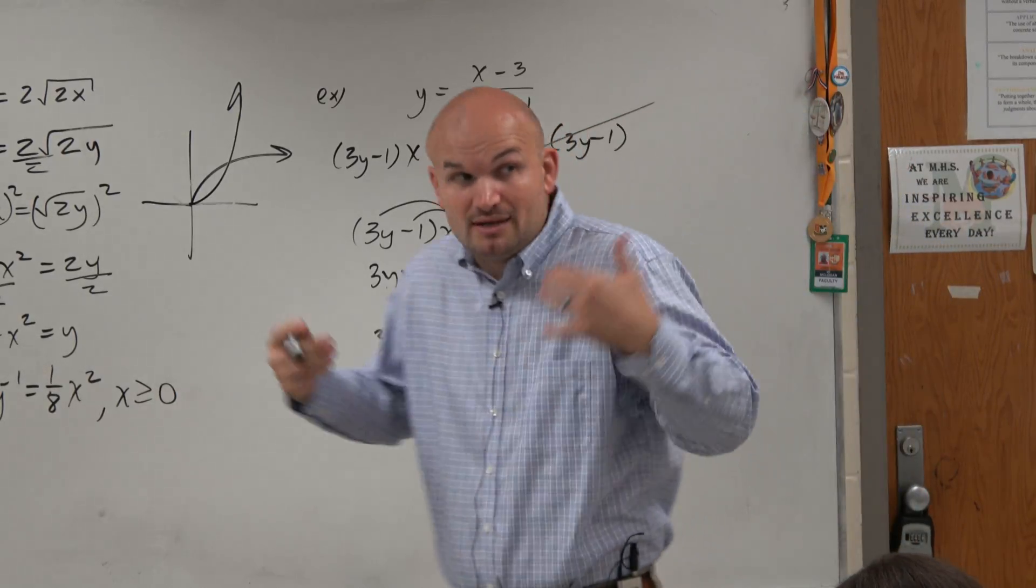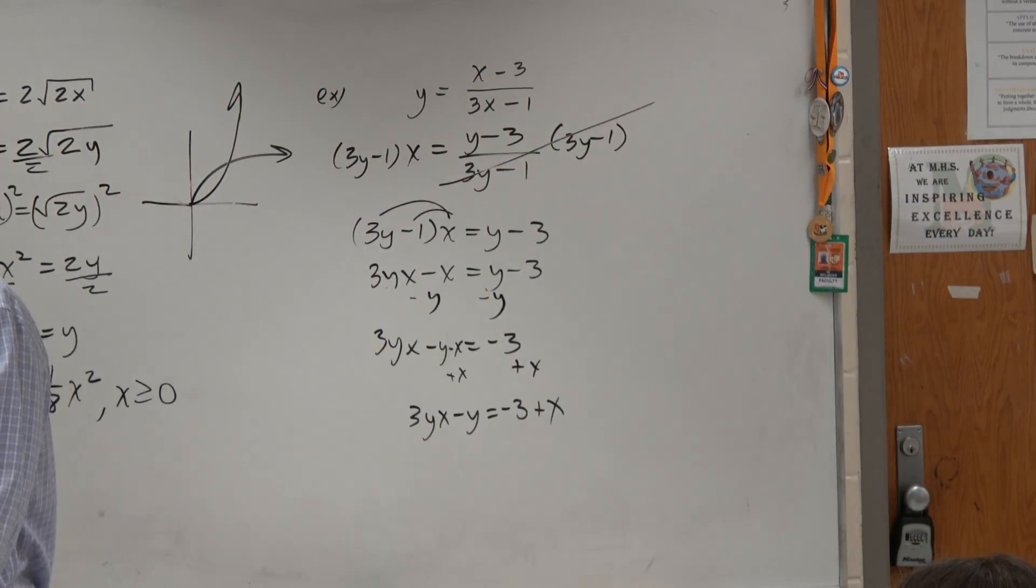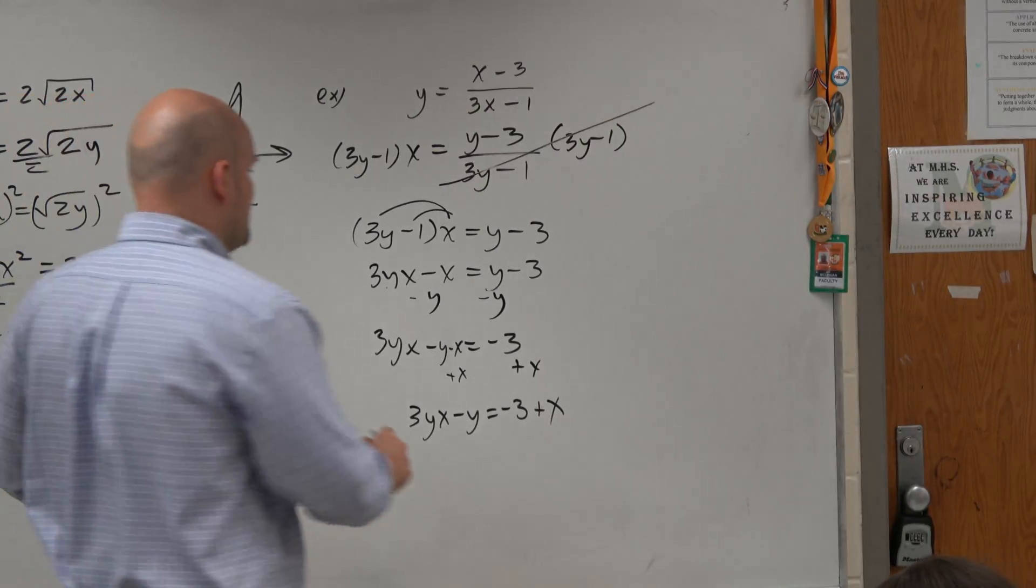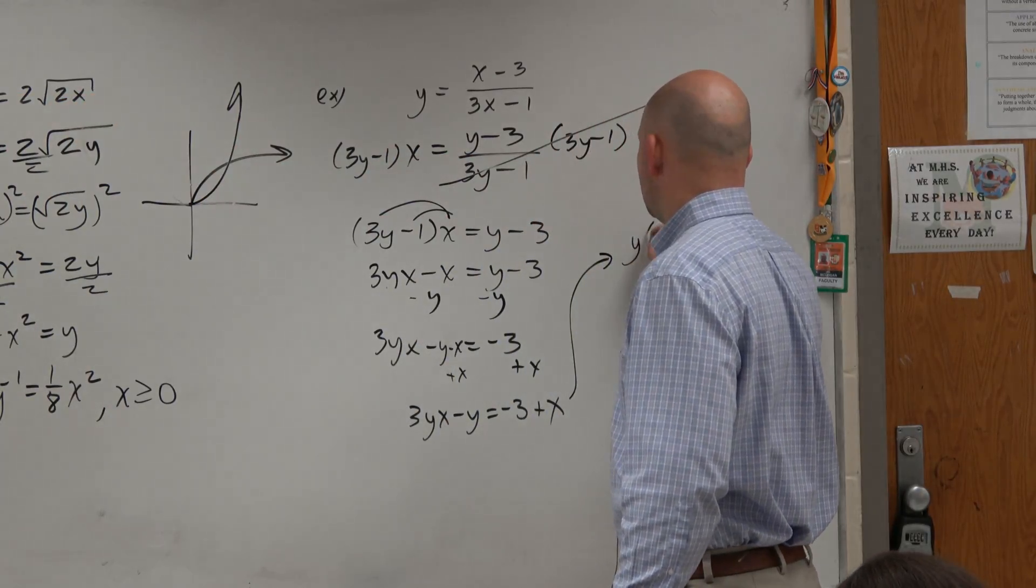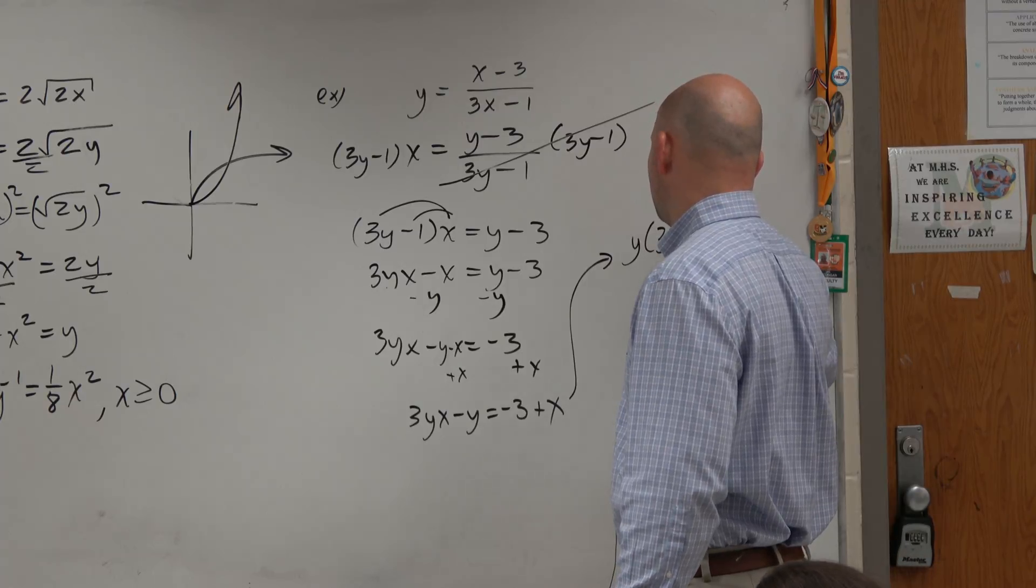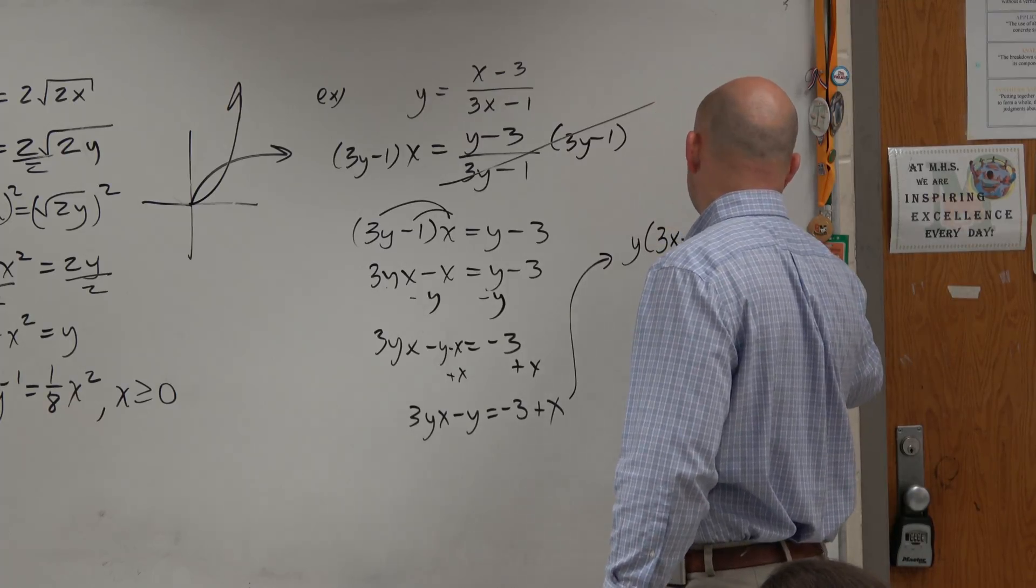Now, we've got to solve for y, though. Can we combine like terms? No. So what we need to do is we need to factor out the y. Sorry, I'm going to have to go up here. So if you factor out the y, you're left with 3x minus 1 equals negative 3 plus x.